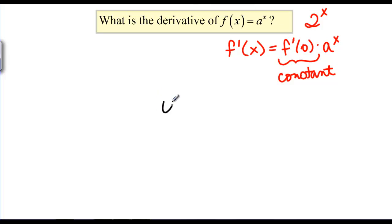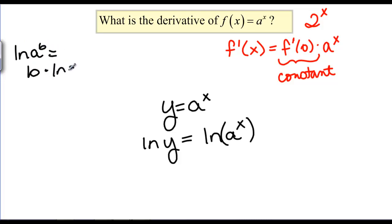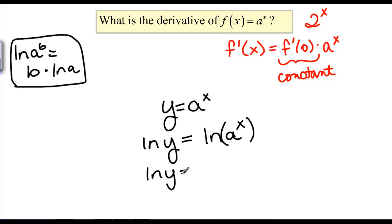We write our equation as Y equals A to the X, and then we're going to take the natural log of both sides to undo the exponential equation. That helps us because there's a log rule from pre-calc that says the natural log of A raised to the B is equal to B times the natural log of A. We're going to use this rule and apply it in our problem, giving us natural log of Y is equal to X times natural log of A. Here, natural log of A is just a constant — if we were looking at 2 to the X, this would just be natural log of 2, which is some number.